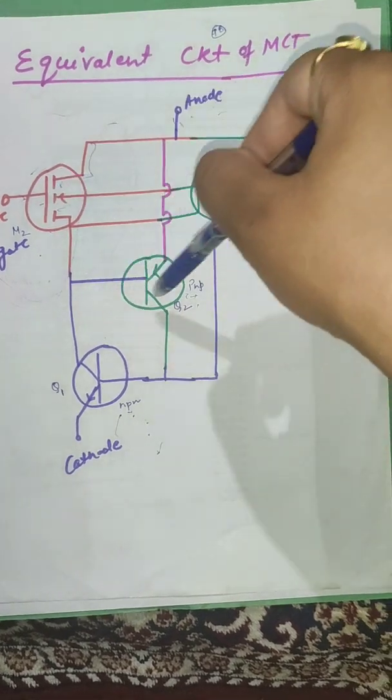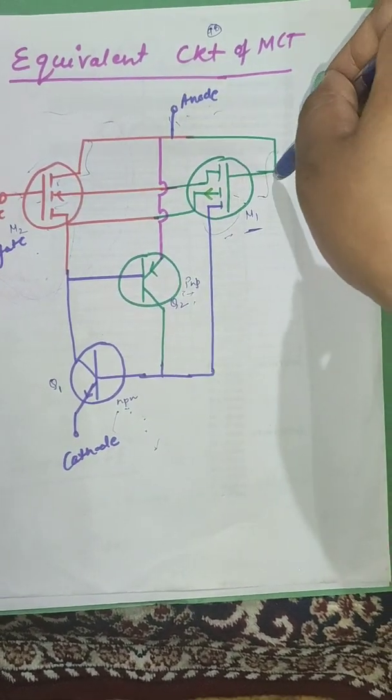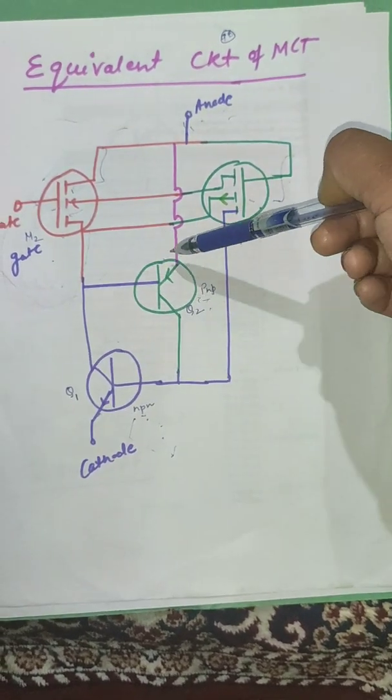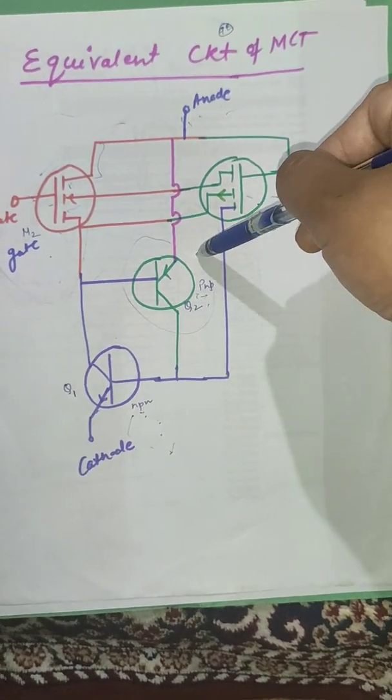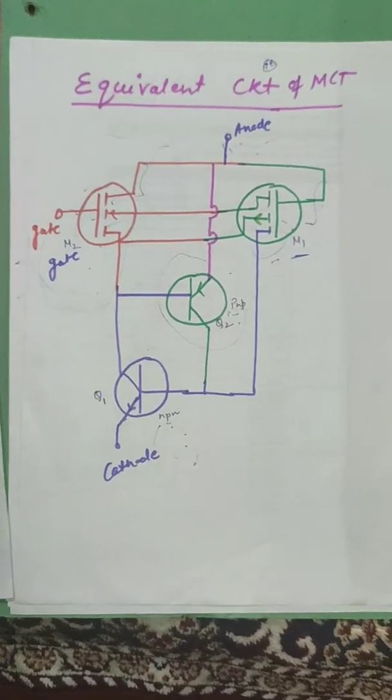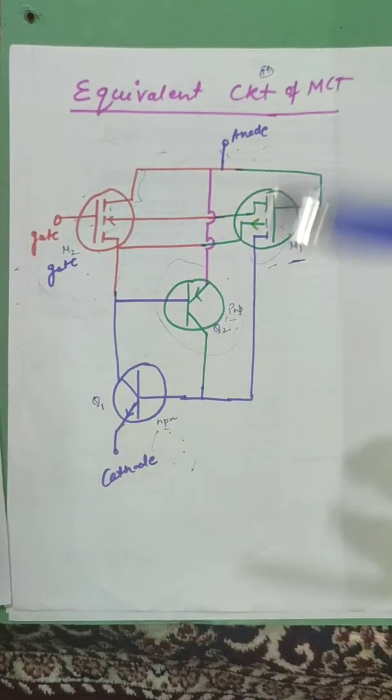The regeneration process will not be done in Q1 because it is blocked by Q2. Anode current will not flow. This is the working.